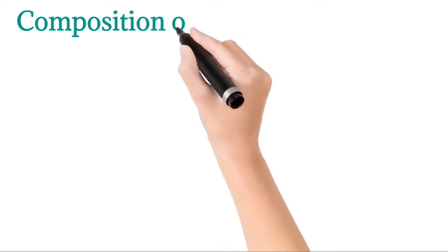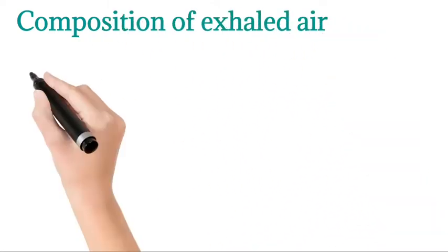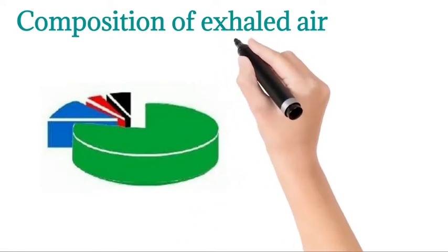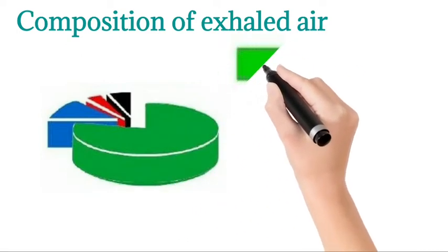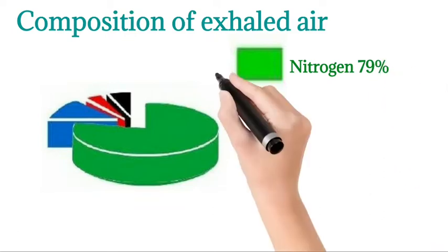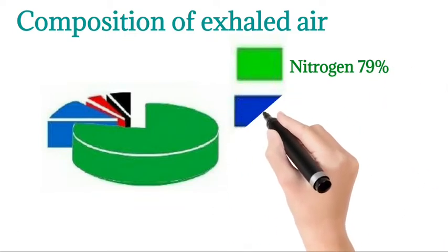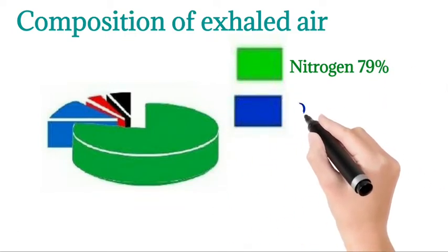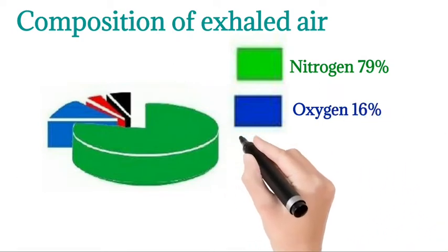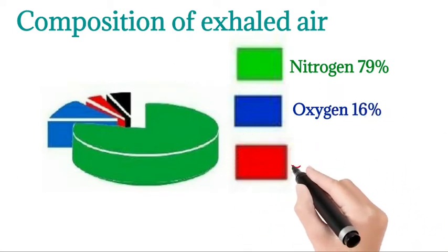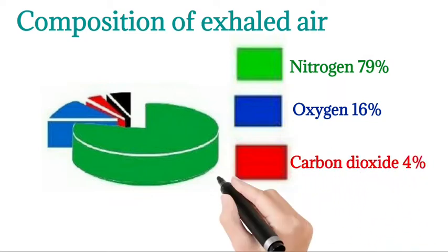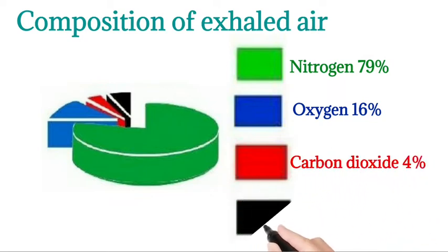Next we move on to the composition of exhaled air. See the pie chart below. The green color represents nitrogen gas, which is about 79 percentage in exhaled air. The blue color represents oxygen gas, which is about 16 percentage in exhaled air. The red color represents carbon dioxide, which is about 4 percentage in exhaled air.